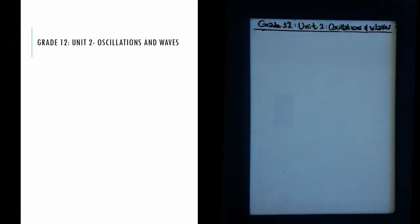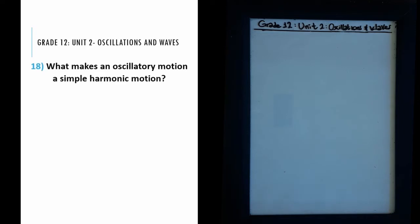Welcome back to JM Lectures. This is the second unit of grade 12 physics: oscillations and waves. Question 18 asks: what makes an oscillatory motion a simple harmonic motion? This is literally asking us for the definition of simple harmonic motion, but first let's understand what oscillatory motion means.